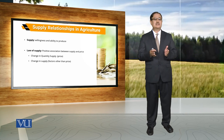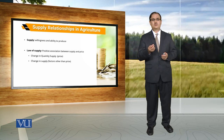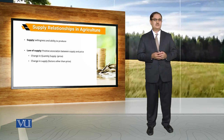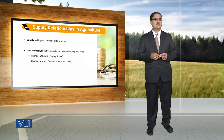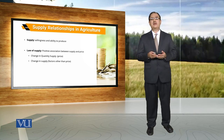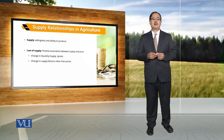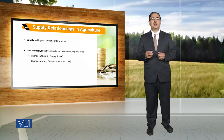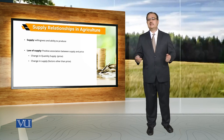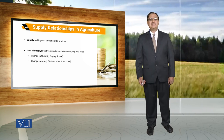Regarding the relationship between supply and price, there are usually two types of changes. First is change in quantity supplied, which occurs because of a change in the price of that particular commodity. When we talk about change in supply, that will be with reference to factors other than price.